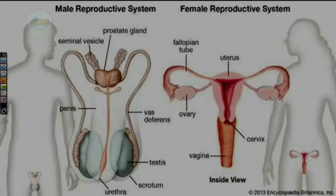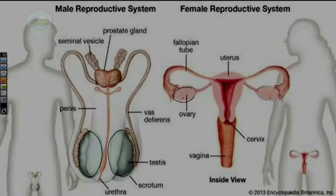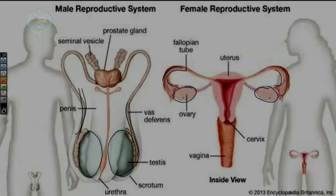Looking at both reproductive systems side by side, you can see some major differences, but also a few similarities. The testes in males and ovaries in females are analogous X-shaped structures, and both lead into tubes — the vas deferens for males and the fallopian tube for females. There are clear structural similarities but very obvious differences between the two systems.